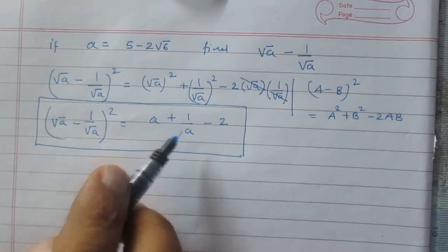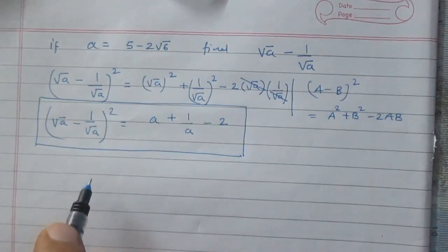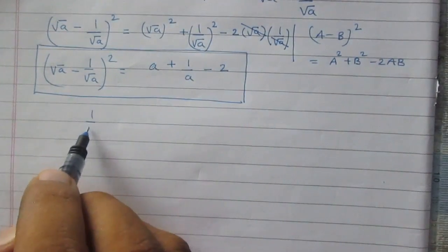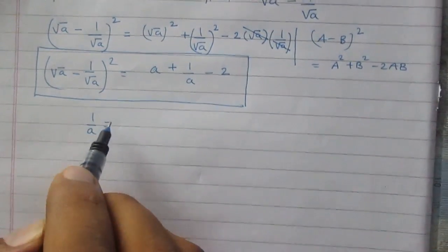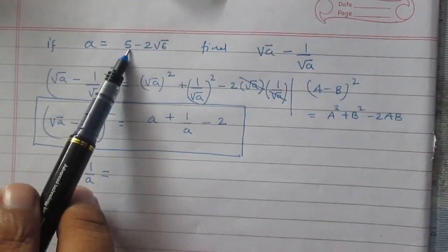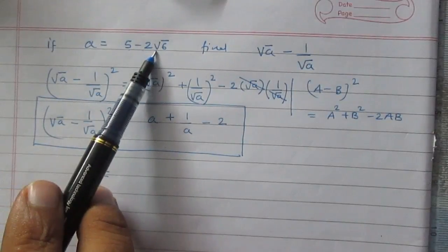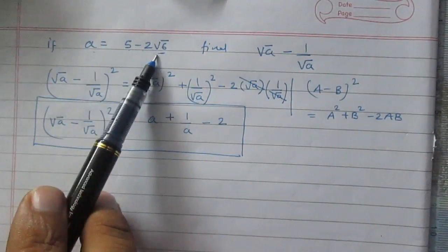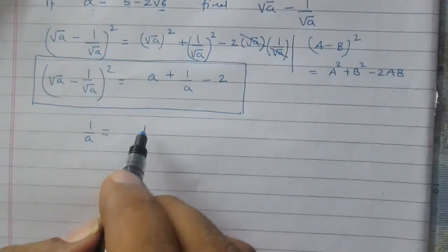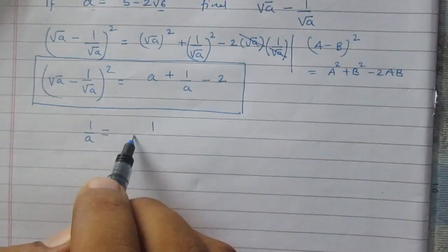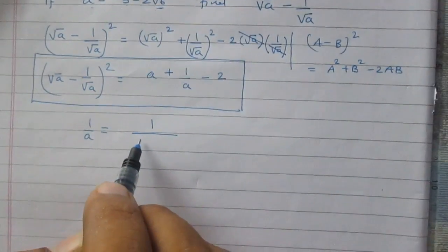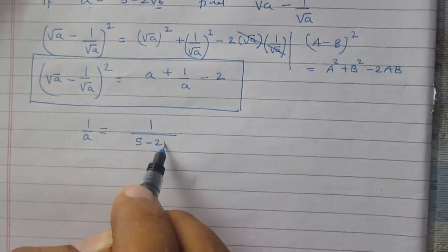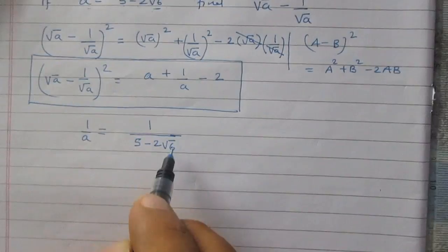Now let us consider 1 upon a. We know that a is equal to 5 minus twice of square root 6, as given to us. So 1 upon a is 1 divided by 5 minus twice of square root 6.